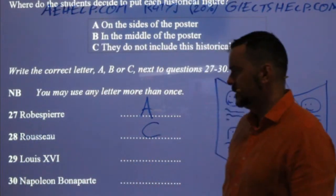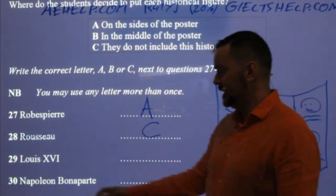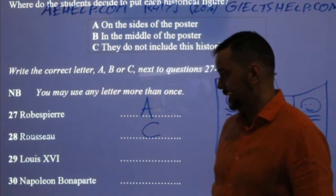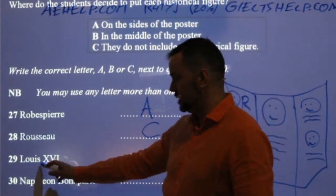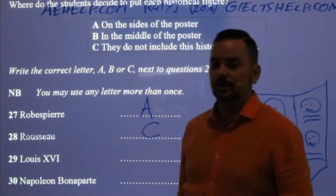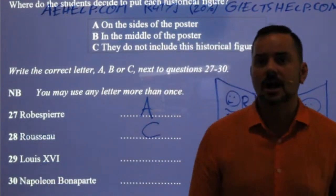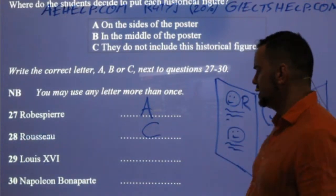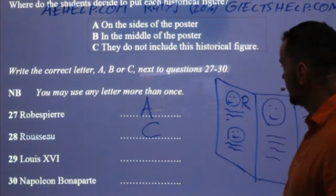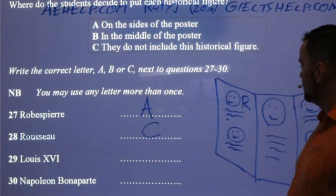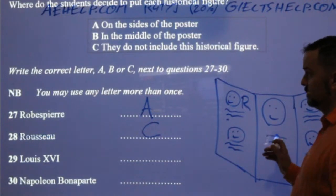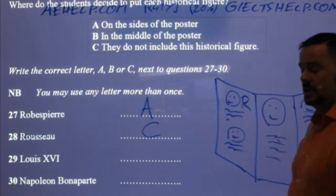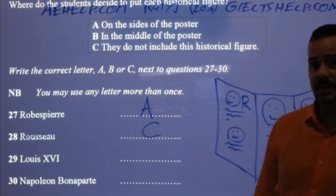Not mentioned. Number 29: Louis the Sixteenth. Notice that for kings and queens, we also use Roman numerals. So number 29: King Louis XVI is on the side. There's only one person in the middle, so if you heard who's in the middle, you shouldn't be picking more than one.